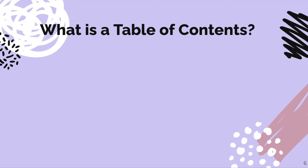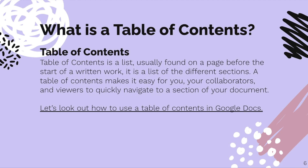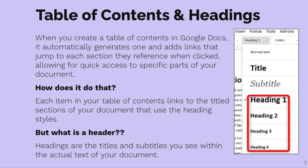What is a table of contents? A table of contents is a list usually found on a page before the start of a written work. It is a list of different sections, and this makes it easy for you, your collaborators, or viewers to quickly navigate to a section in your document.